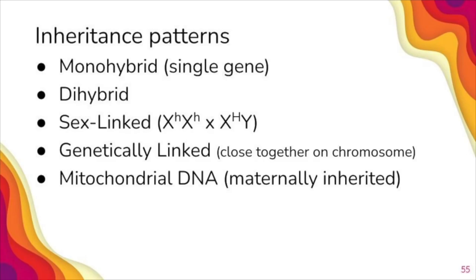As far as genetics goes, inheritance patterns that might show up include single gene or monohybrid inheritance. Dihybrid inheritance is a possibility where we're tracking two genes. Sex-linked inheritance where we have a trait, generally an X-linked trait that we're tracking. Remember, males only need one copy to display the trait. Females need two if it's recessive. We can talk about genetically linked inheritance where two genes are close together on chromosomes, so typically they're inherited together. And then inheritance of traits in mitochondrial DNA. Remember, your mitochondria comes from the egg or the ovum, and so that is going to be inherited from the mother.